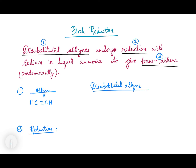An alkyne basically has a triple bond between two carbons. If you see, this is ethyne — there is a triple bond between two carbon atoms. The valence of carbon is four, meaning carbon can have four groups. For this carbon, there are three bonds with another carbon, and for the fourth bond it has a hydrogen.